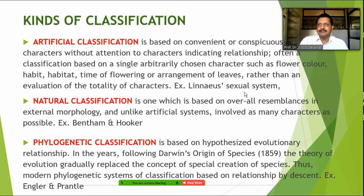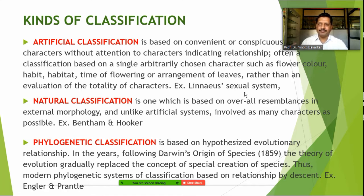Of these three basic classification systems, we are going to focus only on the natural classification system of Bentham and Hooker. In summary: artificial systems give importance to one or two characters; natural systems take all observable characters into consideration; and the phylogenetic system considers all branches related to botany and characters generated from them.